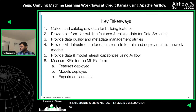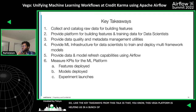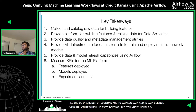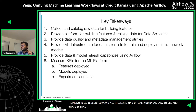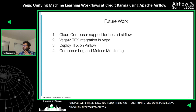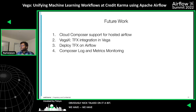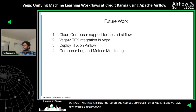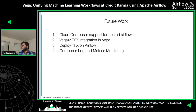The key takeaways from this talk: this Vega platform is helping us in several sections. It is helping us catalog raw data. It is a data science framework infrastructure which helps develop models in any kind of framework — TensorFlow, scikit, and all of these are easy to use from both experimentation and production perspectives. From future work perspective, Nick has talked on it a bit: we have Airflow hosted on our own VMs and we would want to leverage Cloud Composer for it. TFX — we've seen it has a really good component management system — so we would want to leverage and integrate with TFX, deploy TFX on Airflow, and use composite logs for metrics and monitoring.